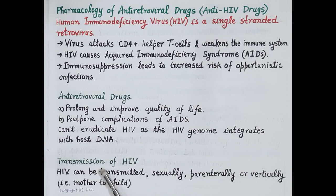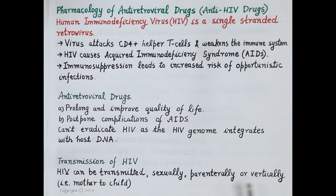HIV can be transmitted sexually, parenterally — that is by infected injections — or vertically, that is from mother to child.